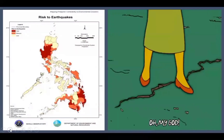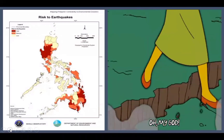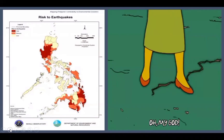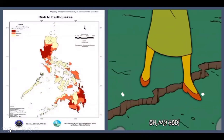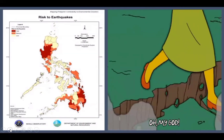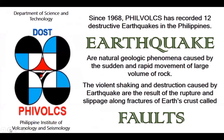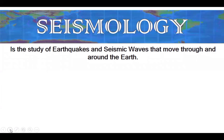Take note of these legends as you explore the geophysical hazard maps. Now, let's explore them one by one. This map will show you the areas that are prone or vulnerable to earthquakes. Since 1968, PHIVOLCS — the Philippine Institute of Volcanology and Seismology — has recorded 12 destructive earthquakes in the Philippines. Earthquakes are natural geologic phenomena caused by the sudden and rapid movement of large volumes of rock. The violent shaking and destruction are the result of the rupture and slippage along fractures of Earth's crust called faults.